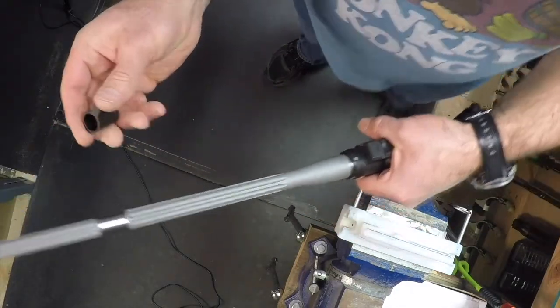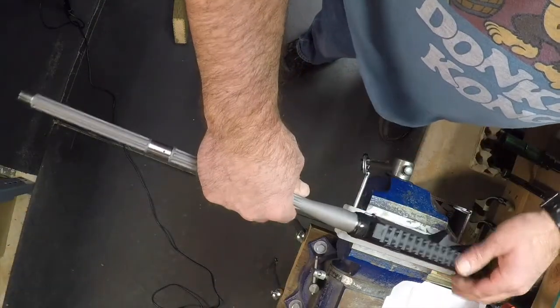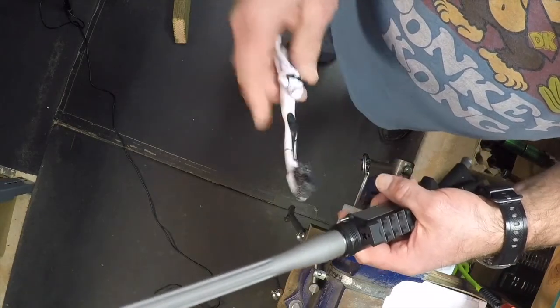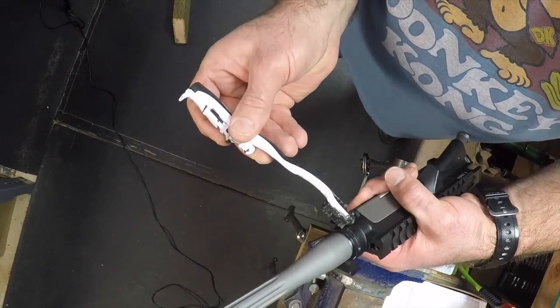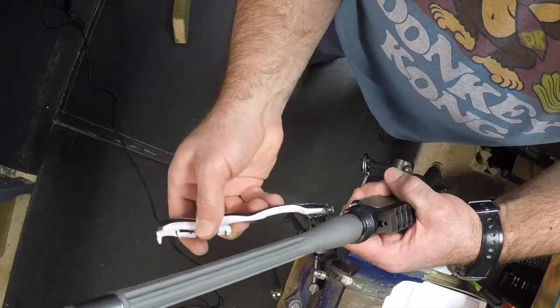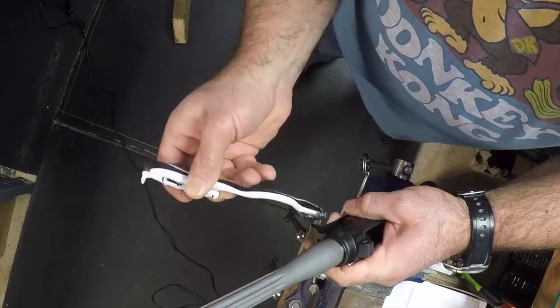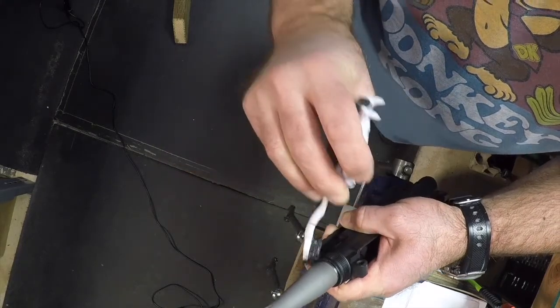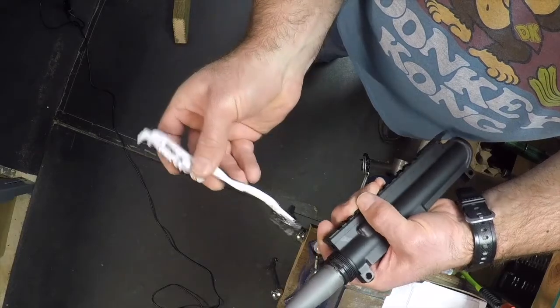Remove the gas block. And then I like to apply this grease to both the threads and also this lip right here on the outside of the barrel extension. Doesn't take much, just get them on both those surfaces.